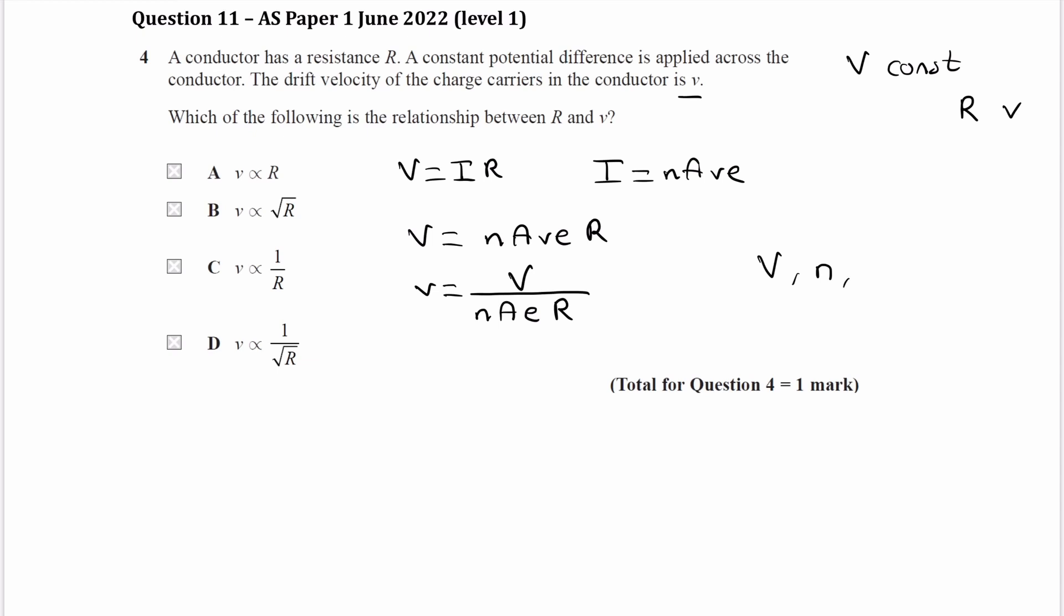Again, the object is not changing. The conductor is not changing. So cross-sectional area remains the same. And e, which is just the charge of, or it's the elementary charge, the charge of an electron, that also is not changing. So all of these things are constant.